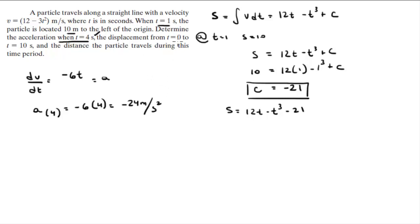The displacement from t equals 0 to t equals 10 seconds. Well, the next thing you need to do is you need to find when the velocity equals 0. And you know that the velocity is 12 minus 3t squared. So if you solve for t, you get that t is equal to positive 2 or negative 2.